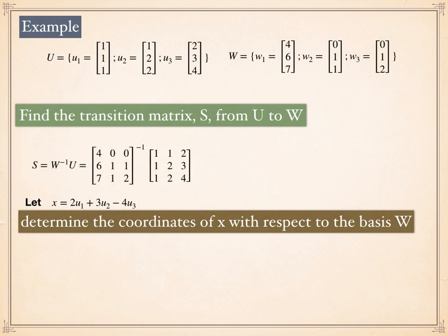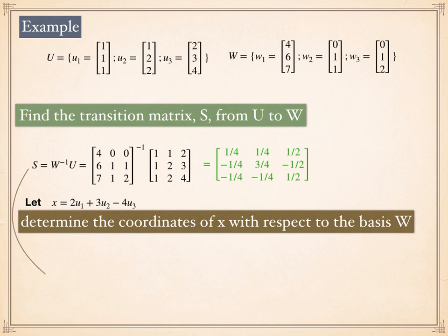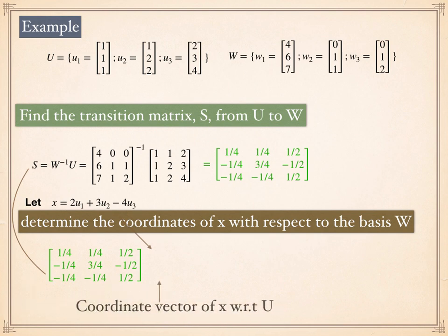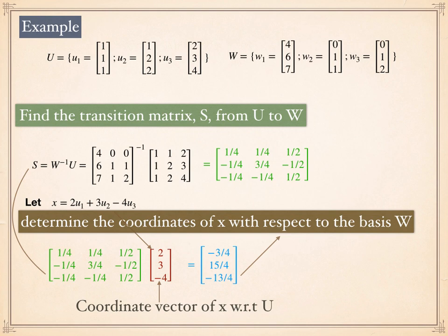Let's find the transition matrix. By definition, the transition matrix S equals the inverse of W multiplied by the matrix U. We found this transition matrix. Then we take the transition matrix multiplied by the coordinate vector of x with respect to U — which is (2, 3, -4) — to find the coordinates of x with respect to basis W. To determine the new coordinates: find the transition matrix and multiply it by the old coordinates to get the new ones.